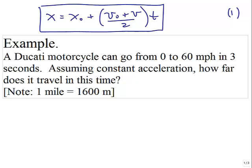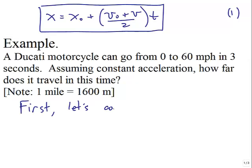Let's do an example using the first equation. A Ducati motorcycle can go from 0 to 60 miles per hour in 3 seconds. Assuming constant acceleration, how far does it travel in this time? Note that 1 mile is 1,600 meters. First, let's convert to SI units.